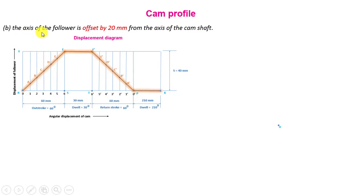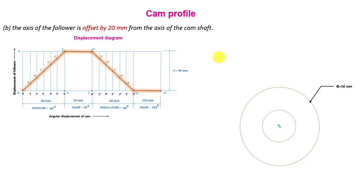Case 2: when the axis of the follower is offset by 20 mm from the axis of the camshaft. Draw the base circle with radius equal to the minimum radius of the cam (50 mm). With O as center, draw an offset circle of radius 20 mm. Draw a tangent to this offset circle that intersects the base circle at R. From OR, mark angle ROS = 60° for the outstroke, angle SOT = 30° for the dwell, angle TOP = 60° for the return stroke, and the remaining 210° for the dwell.